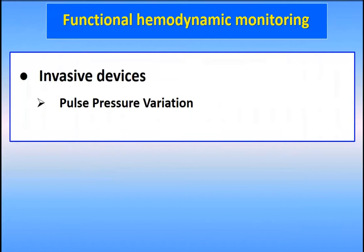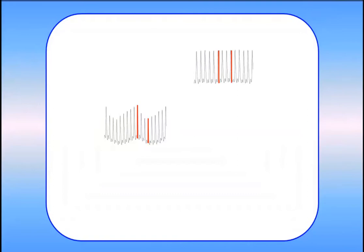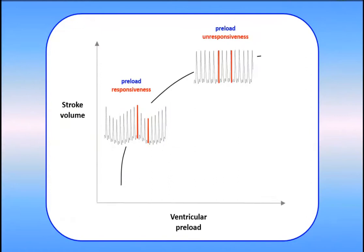How can we measure changes in stroke volume during mechanical ventilation? We can use a surrogate of stroke volume, which is pulse pressure — the difference between systolic and diastolic pressure. Pulse pressure variation, or PPV, can be used. With this kind of waveform shape, you can predict that the patient will respond to fluid because high pulse pressure variation is associated with fluid responsiveness, while no pulse pressure variation is associated with fluid unresponsiveness.